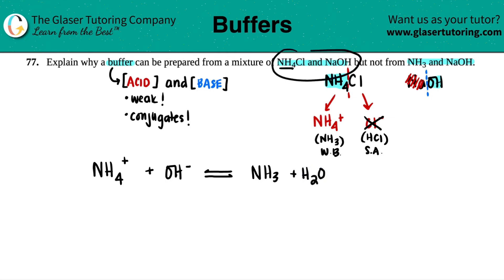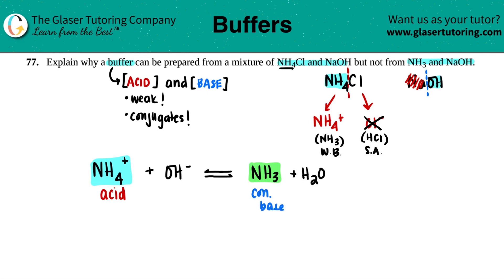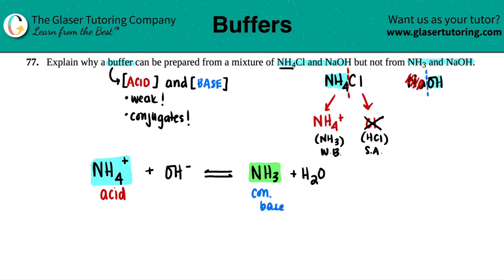So here is the reaction between NH4Cl and NaOH. Would this constitute a buffer? We had NH4+ as our acid, and we made the conjugate base NH3. That is what a buffer system is — you have both the acid and its conjugate base. And they both have to be weak: NH4+ is a weak acid, NH3 is a weak base, and they are conjugates of each other. That's why you can form a buffer system here.